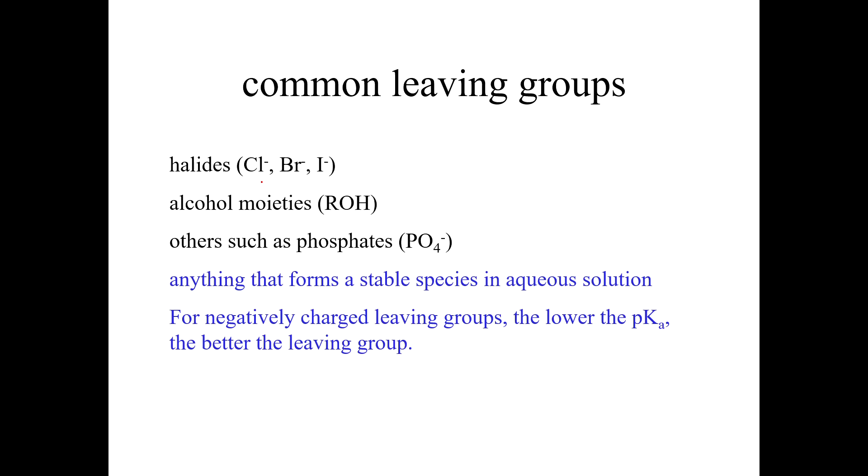So you need a common leaving group. Halides make really good leaving groups. So chloride, bromide, iodide, they make good leaving groups. Alcohol moieties, phosphates, things like that make good leaving groups. Anything that will form a stable species in the aqueous solution that it's being kicked out into. And so we can judge how good a leaving group is by looking at its pKa. The lower the pKa, the better the leaving group.